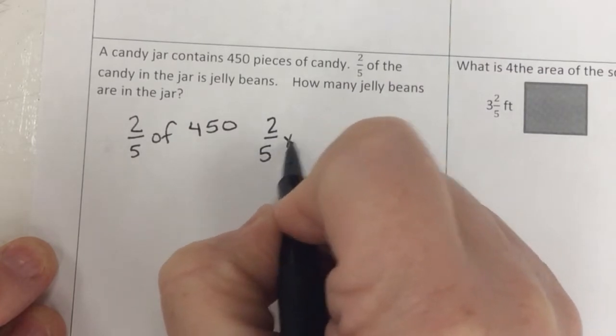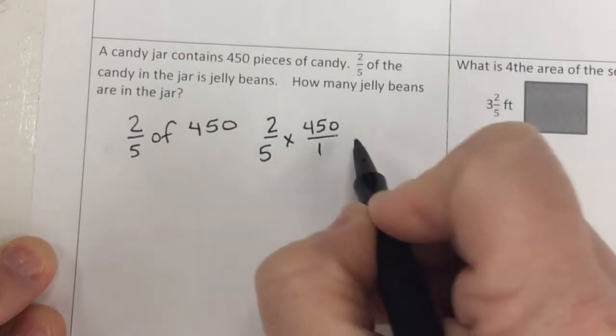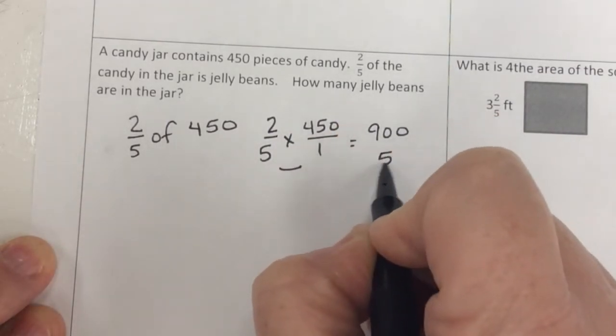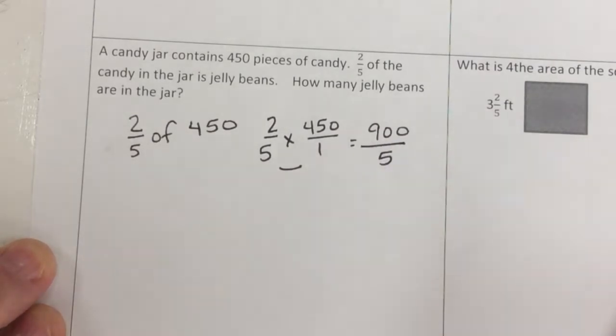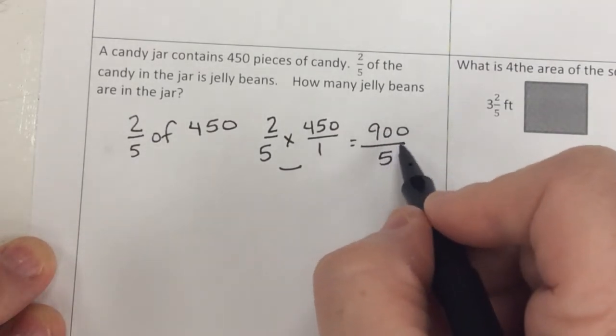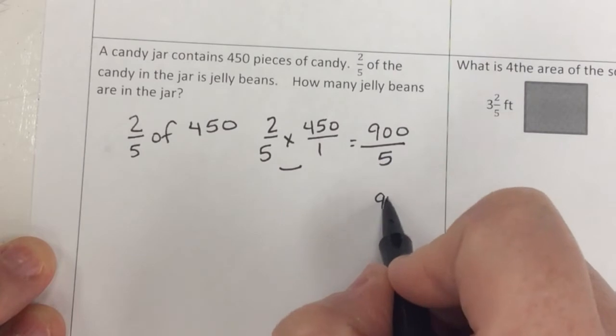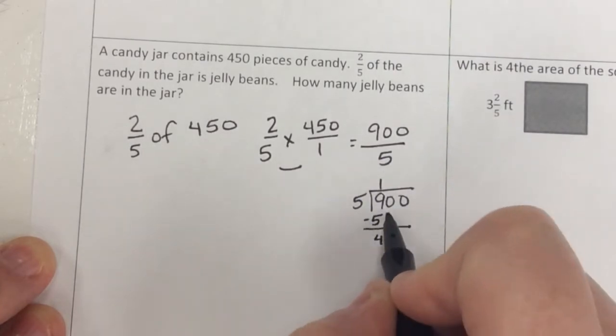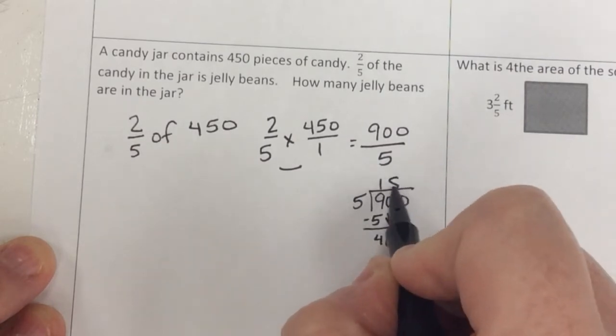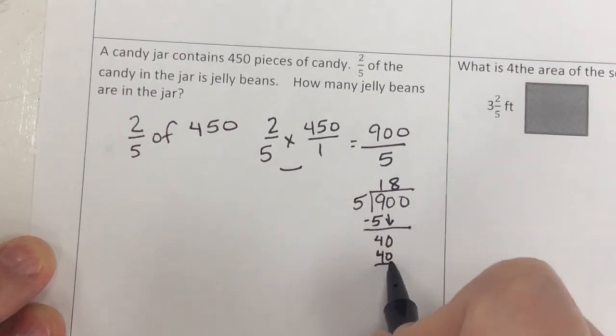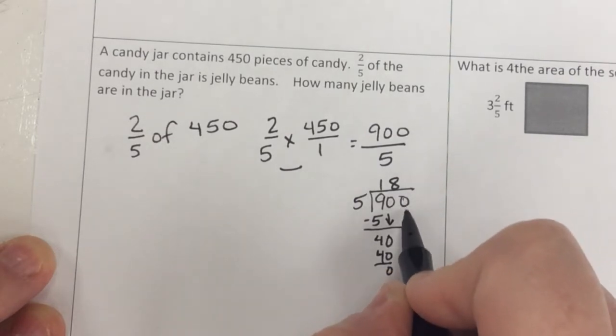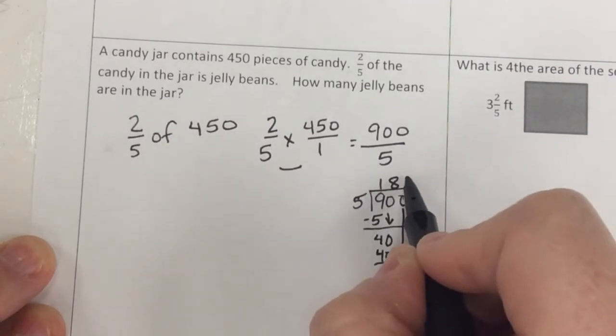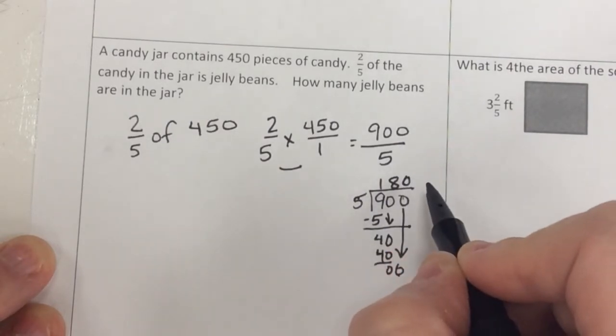Well, a couple of things you can do. 2/5 times 450/1. 2 times 450 is 900. 5 times 1 is 5. So 900 divided by 5. I could divide that. 5 times 1 is 5. And then I get a 4 and bring down my first zero. 5 times 8 is 40. And I have a zero. Now I'm not done because I haven't used this last zero over here. If I bring that down and I have a zero here, 5 goes into zero zero times. So it's 180.